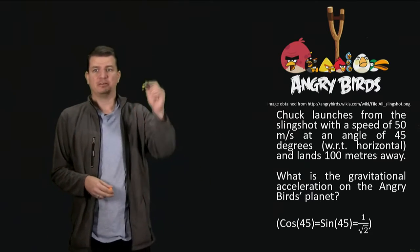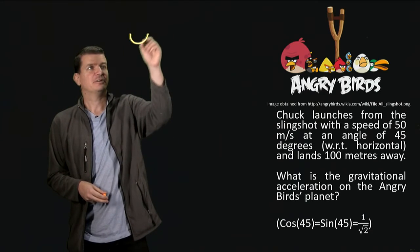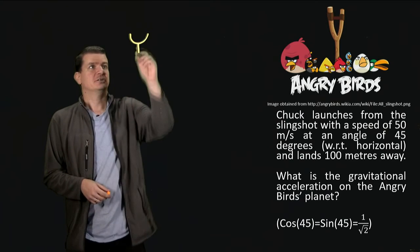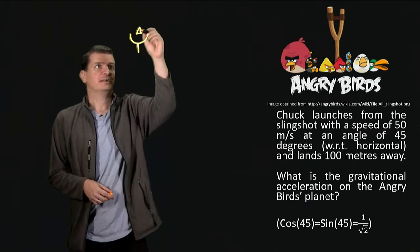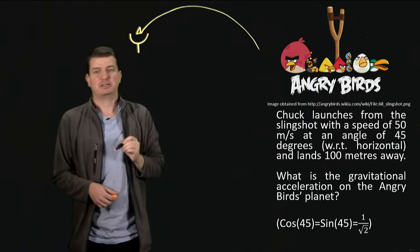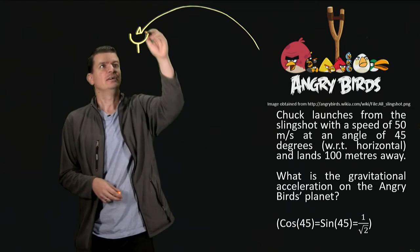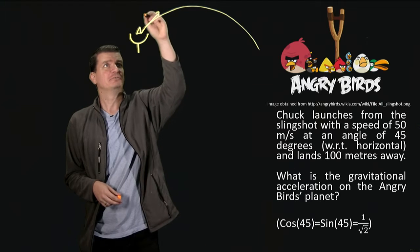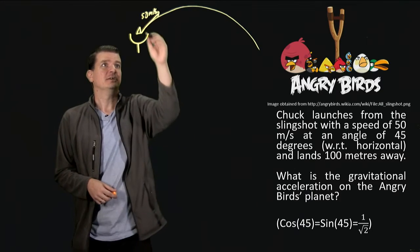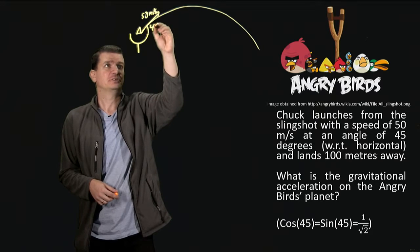So let's suppose then you enlist the help of Chuck in order to help find out what that gravitational acceleration is, and you're going to use projectile motion to do it. So in the Angry Birds they're always firing themselves from slingshots. So we'll get Chuck to go ahead and do that. He'll launch himself, and he'll travel in some nice projectile motion, and we'll say that we initially have a velocity of 50 meters per second, and we're traveling at some angle, 45 degrees.